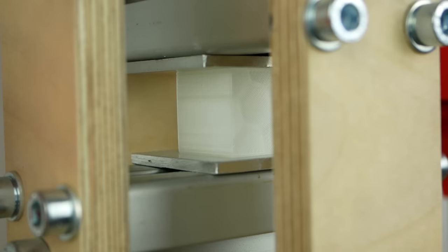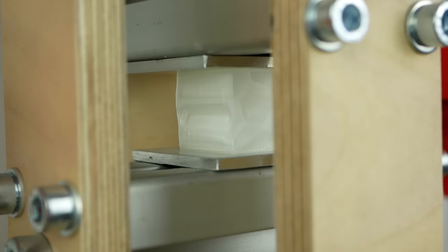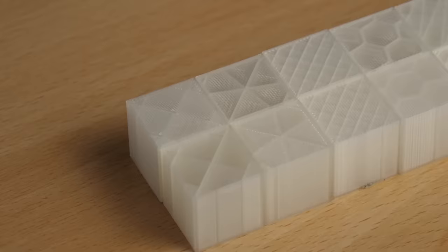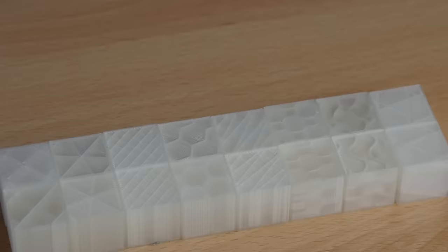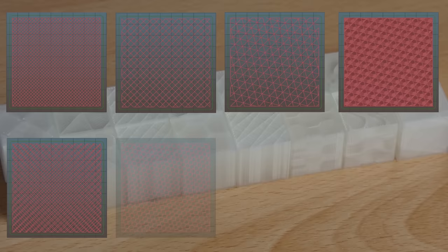I'm well aware that this shell will add additional strength to the structure so we are not purely testing the infill, but since it is the same for all we can still compare the results. I haven't tested all of the patterns available and tried to concentrate on the, in my opinion, most relevant ones which are rectilinear, grid, triangle, cubic, line, honeycomb, 3D honeycomb and gyroid.